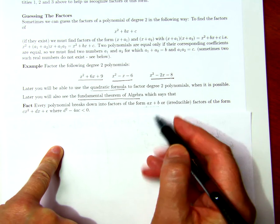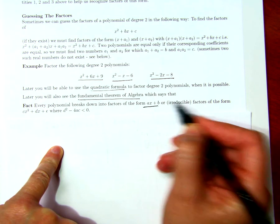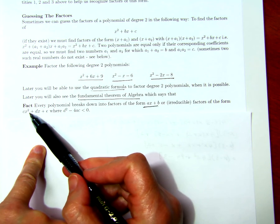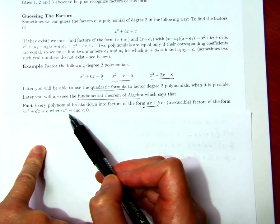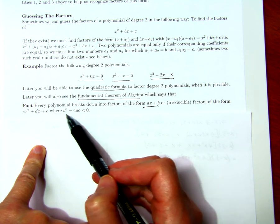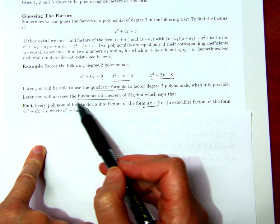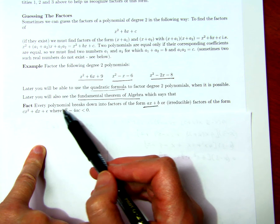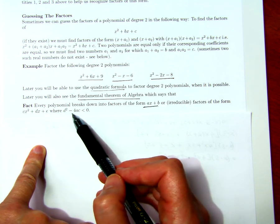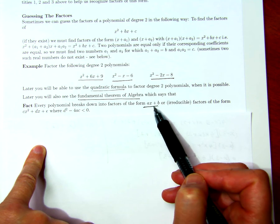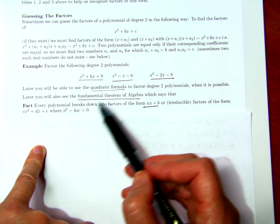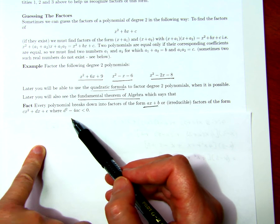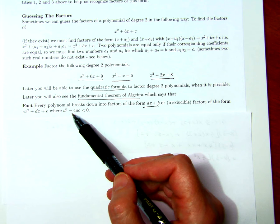it breaks down into factors of the form ax plus b, so they have degree 1, or factors of the form quadratic polynomials, cx squared plus dx plus e, where d squared minus 4ac is less than 0. This is called the discriminant of the polynomial, or the discriminant of the quadratic. Quadratics of this form are irreducible, so they can't be broken down into a product of two linear factors. This will also fall out of the quadratic formula, which involves the square root of this expression, which doesn't exist if this expression is negative.